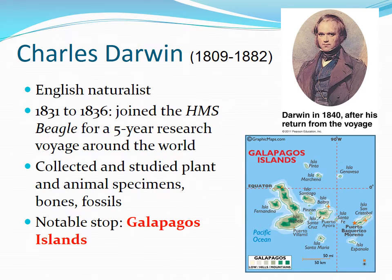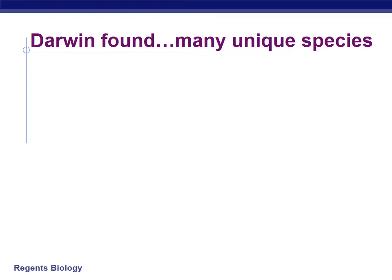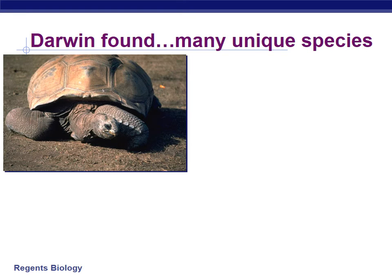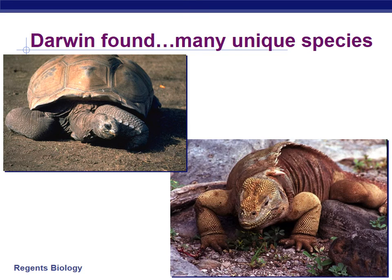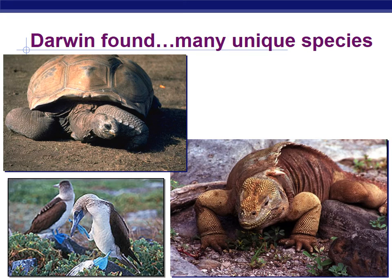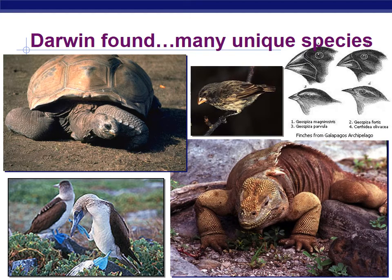Darwin's most famous stop was the Galapagos Islands. He found many unique species found only there: giant tortoises, marine iguanas — which unusually live in the ocean — the blue-footed booby, and his famous finches. The different finches found on each of the different islands were a particularly significant discovery.